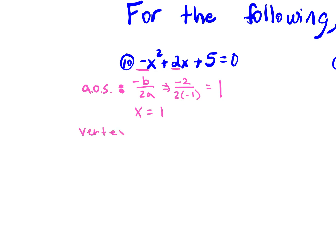Now let's find our vertex. The x value of our vertex is 1 — same as the axis of symmetry. To find the y value, plug 1 in for all x's: negative 1 squared plus 2 times 1 plus 5 gives negative 1 plus 2 plus 5, which equals 6. So our vertex is at 1, 6.